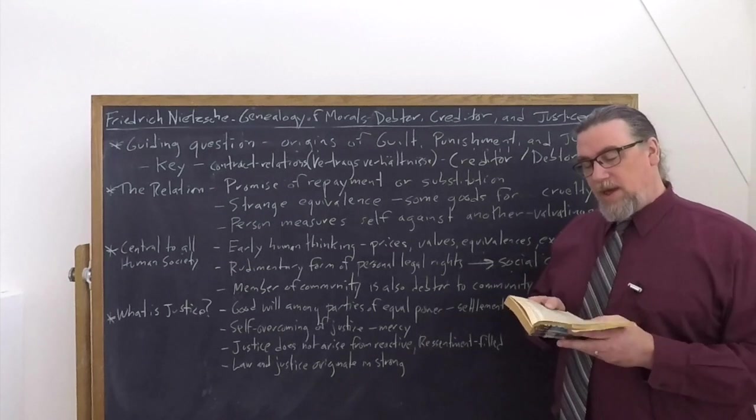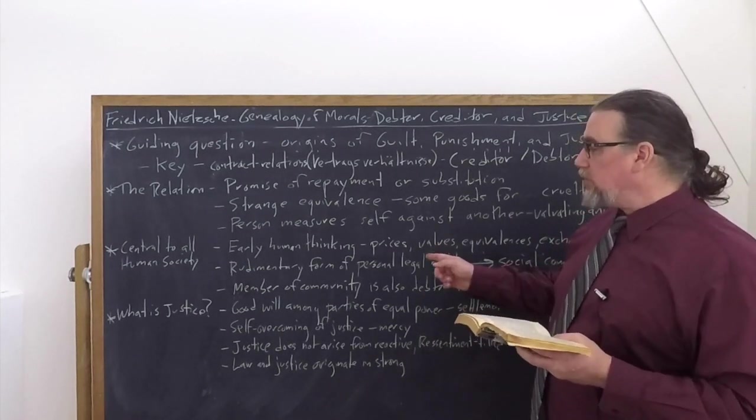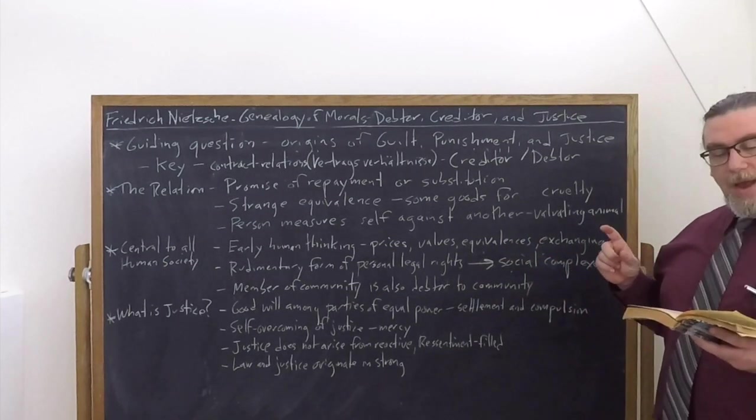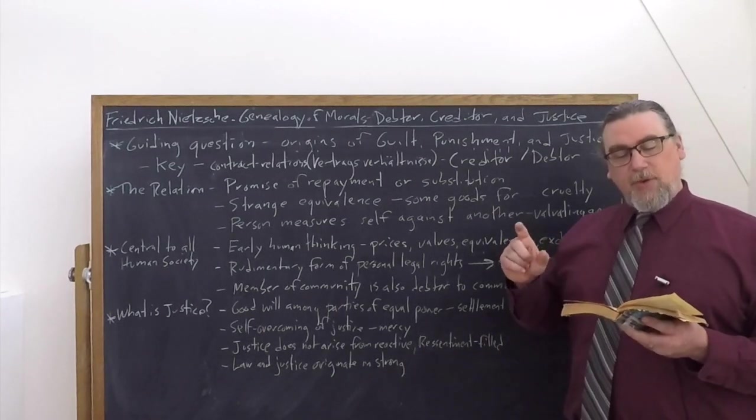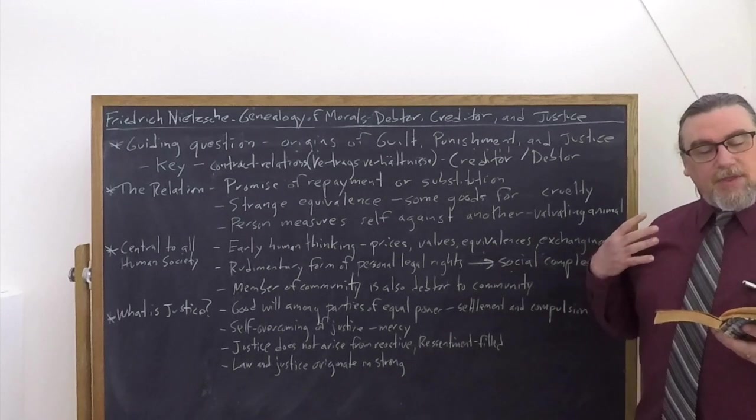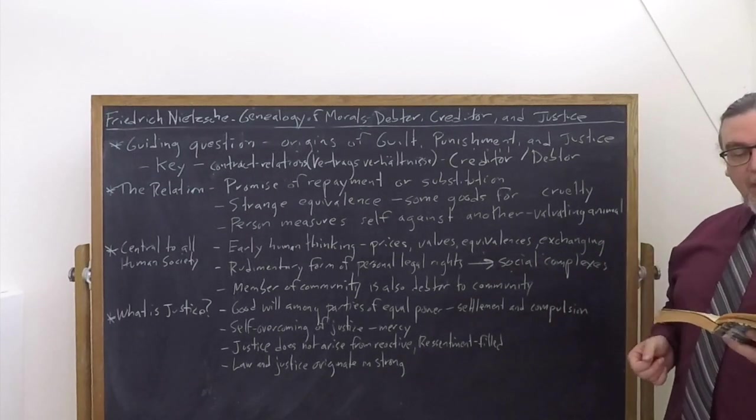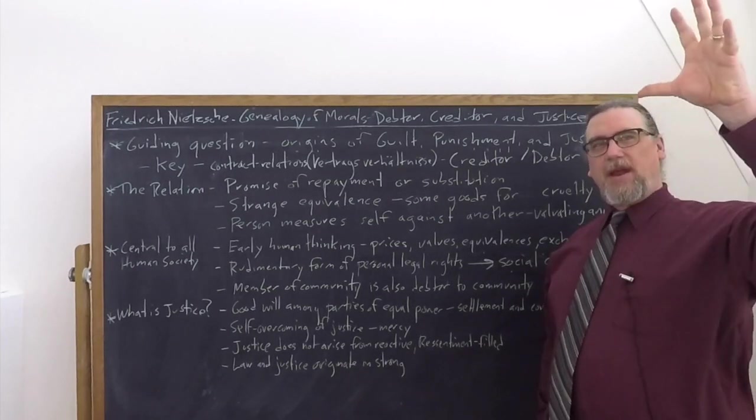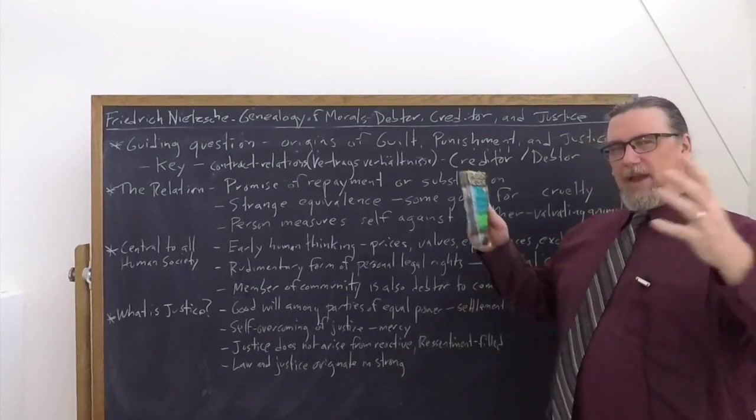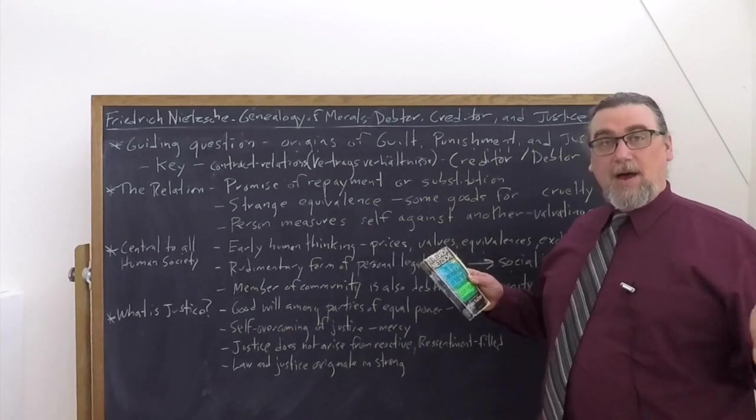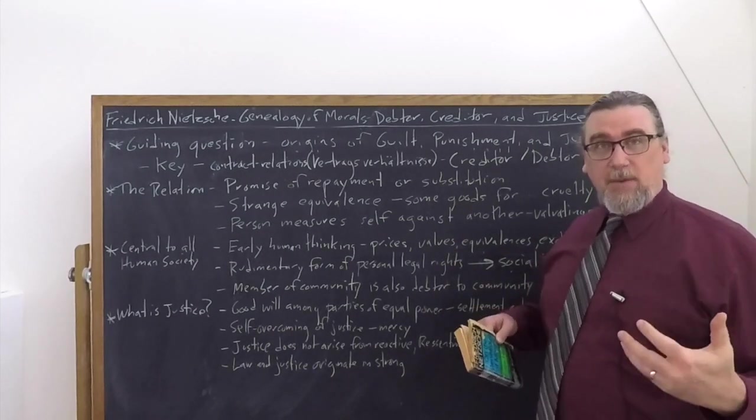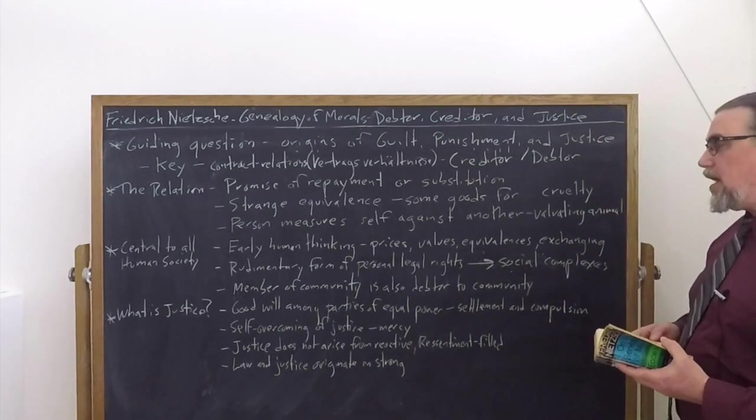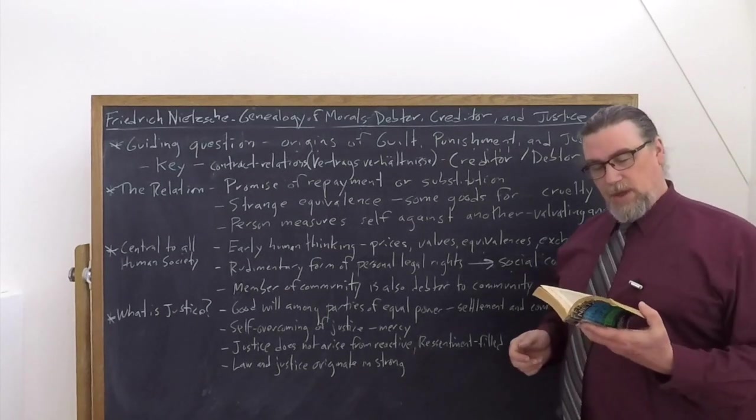He tells us, the oldest kind of astuteness developed here did human pride, the feeling of superiority in relation to other animals have its beginnings. Perhaps our word man still expresses something of precisely this feeling of self-satisfaction. Man designated himself as the creature that measures values, evaluates and measures. And so he says that buying and selling along with their psychological appurtenances, all these things connected with buying and selling, like being a creditor or a debtor, promising, are older even than the beginnings of any kind of social forms of organizations and alliances.